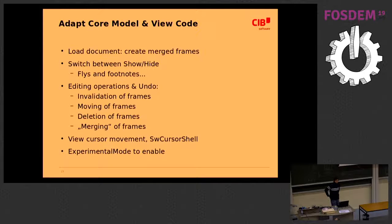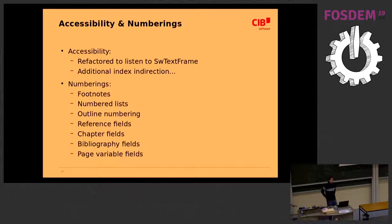That was the scope of the first step. The second step was to adapt the connection between the core model code and the core view code, so that whenever editing operations occur that would merge two paragraphs or split them, the proper number of text frames is created for them. Once that was done, the feature was in a good enough state that we could turn it on in master if you have the experimental mode setting enabled. That was also the state at the previous talk on this topic at the LibreOffice conference.